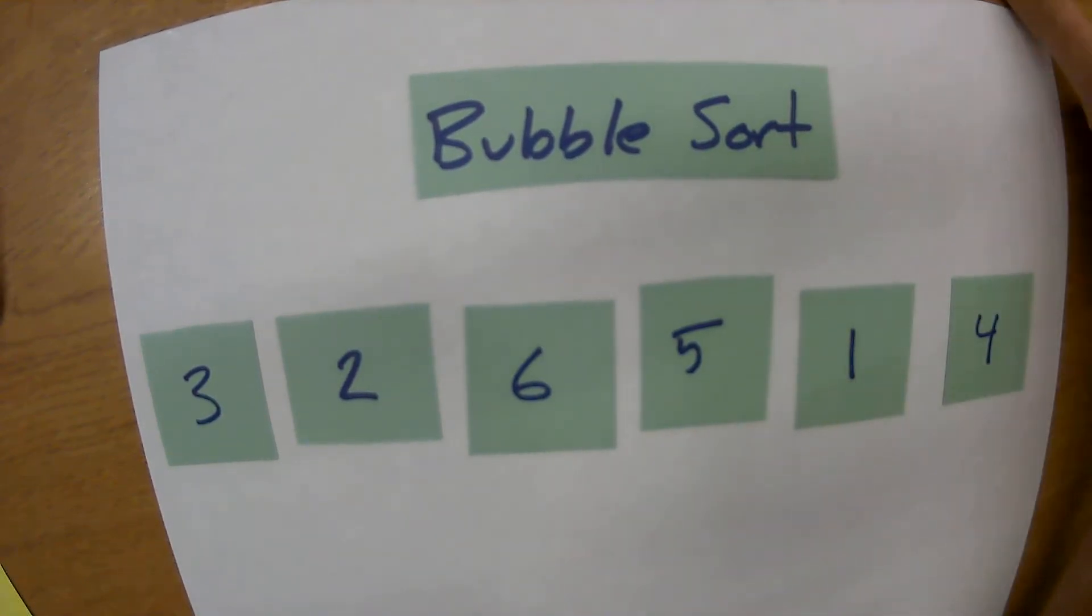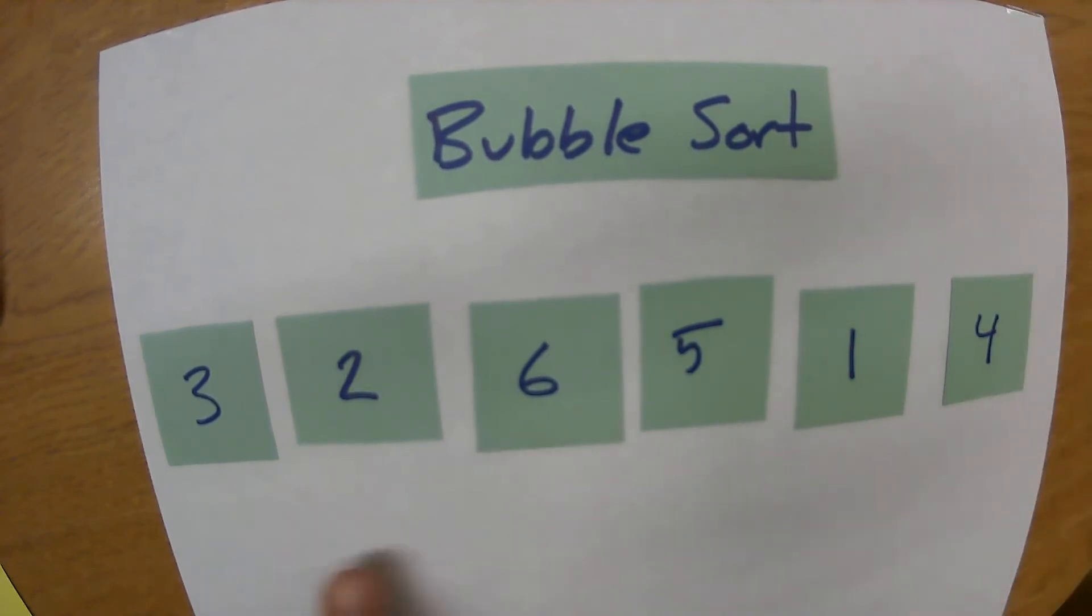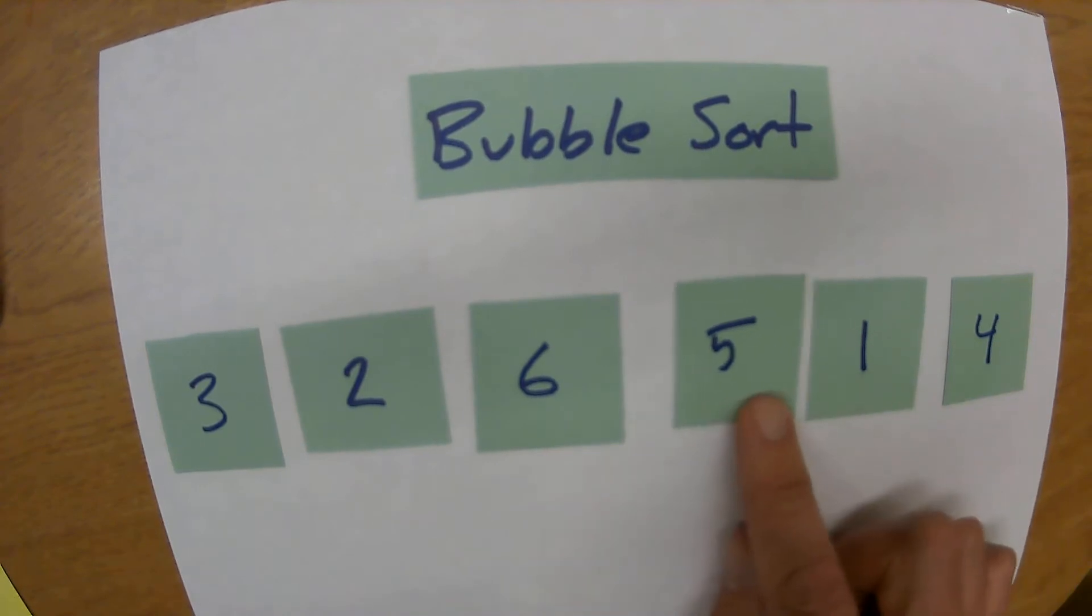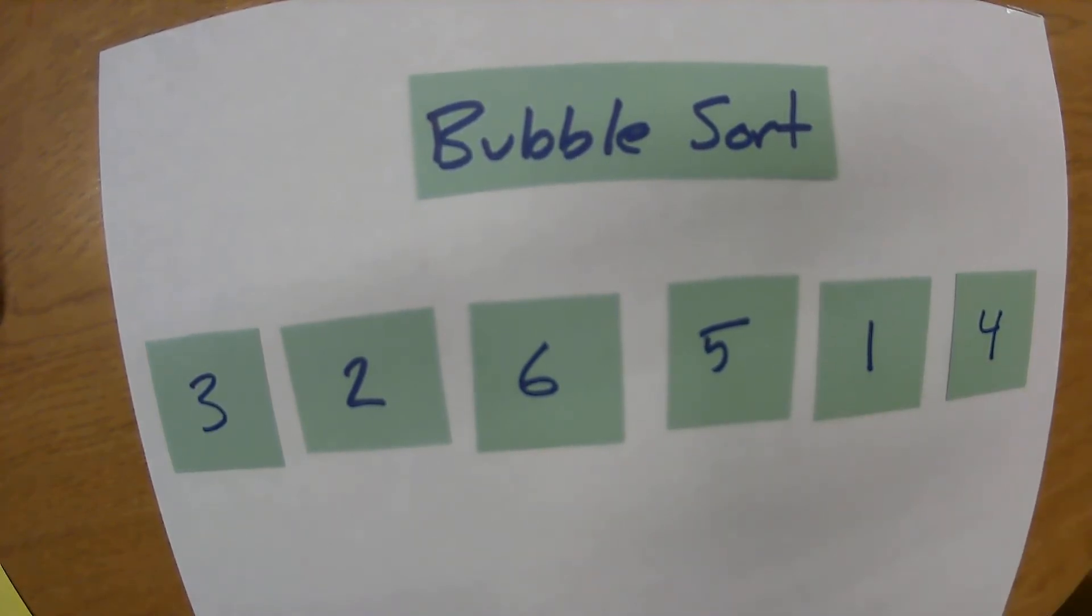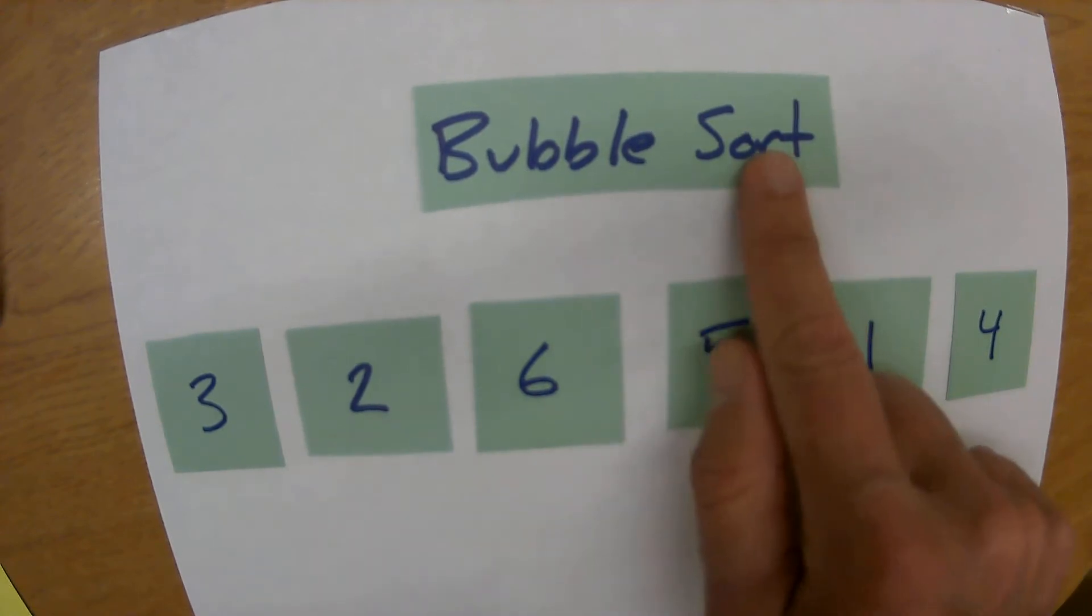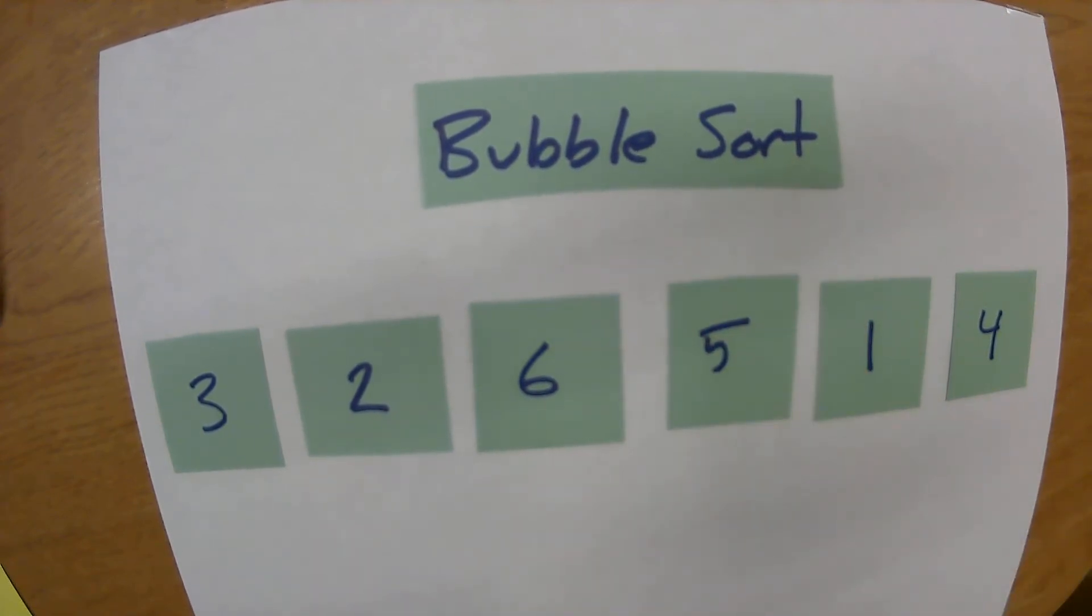So in this video what I want to do is look at some common sorting algorithms and we're going to do this just by dragging some squares around on a piece of paper. We'll get a sense of how the algorithms work before we actually look at any code. The first one we'll look at is a bubble sort and I'm picking this one because it's a very simple algorithm to understand.